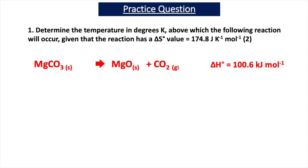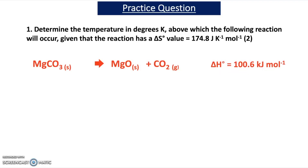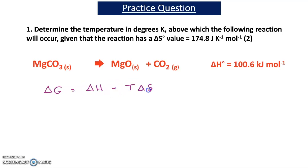Now let's test your understanding with some practice questions. The first practice question asks you to determine the temperature in degrees Kelvin above which the following reaction will occur, given that delta S equals 174.8 joules per Kelvin per mole and delta H equals 100.6 kilojoules per mole. Pause the video and have a go at it.